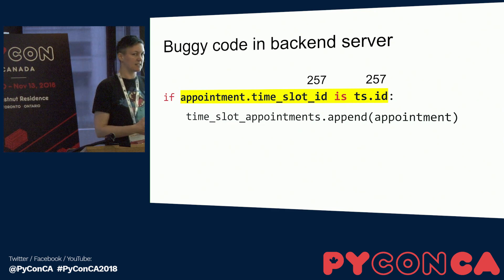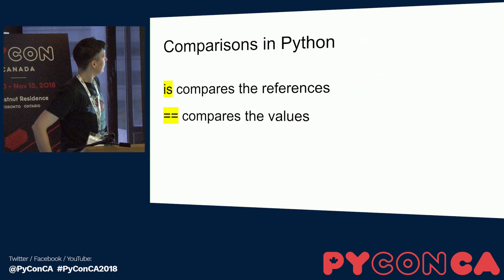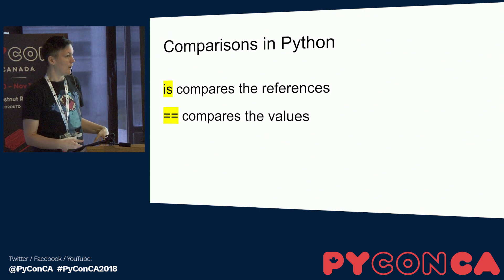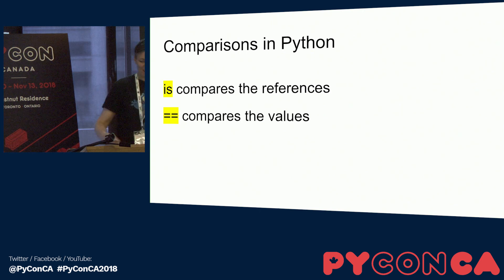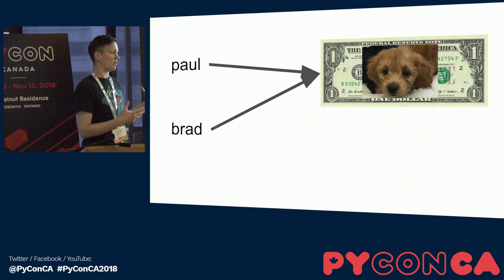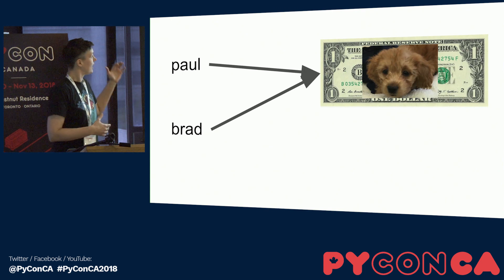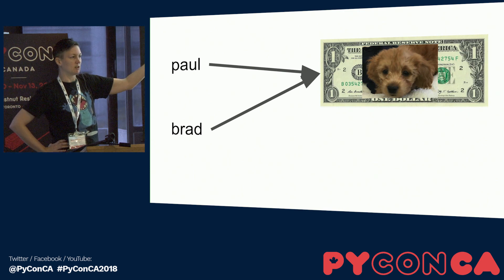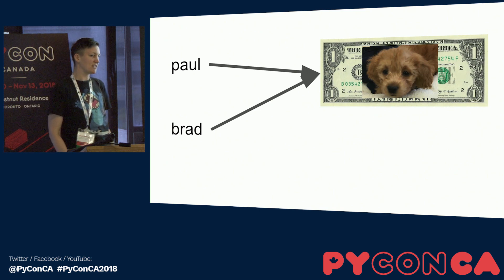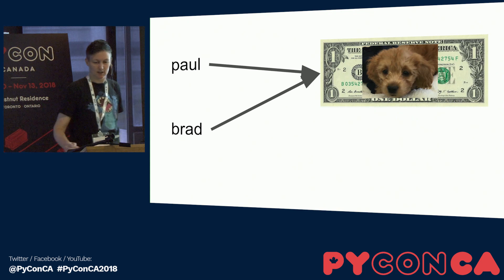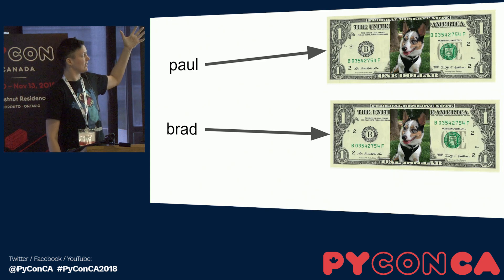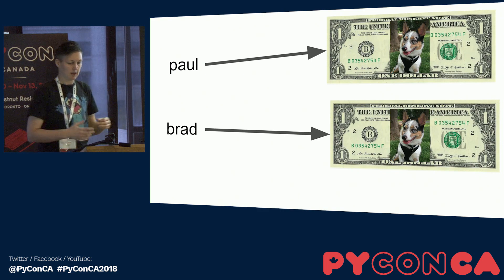Now I'm going to give you some background on how comparisons work in Python. We have the `is` keyword that compares references, and the double equals symbol that compares by value. To show the difference: if Paul and I both have a dollar and we compare by value using double equals, we get true because both dollars equal one. If we compare by reference, we also get the same value — we're pointing to the same dollar. However, if we have different dollar bills, comparing by value gives true, but comparing by reference gives false because they are different objects.